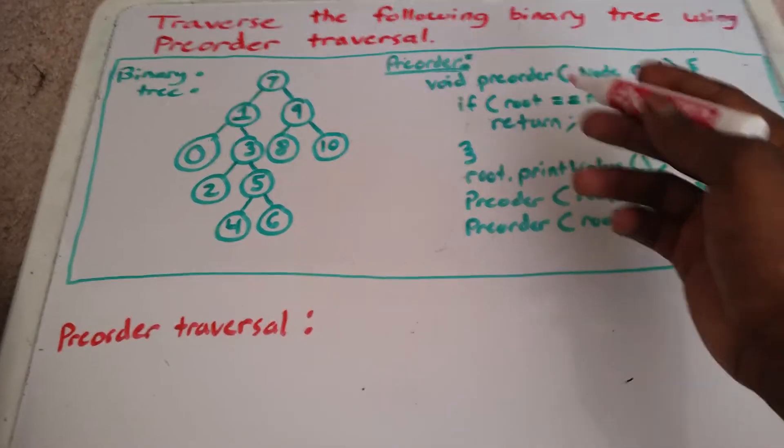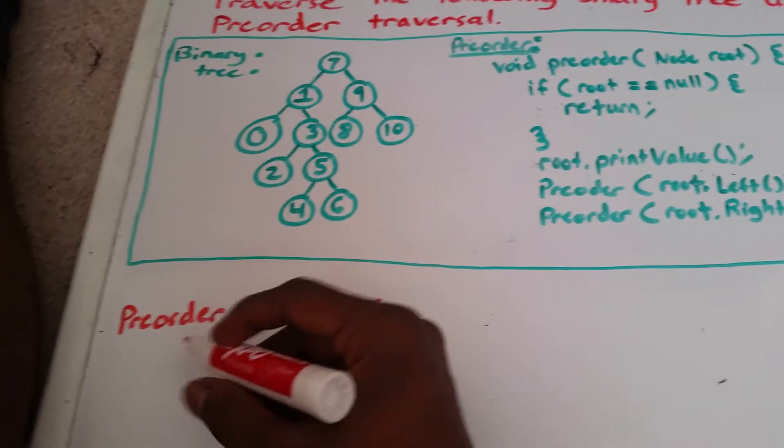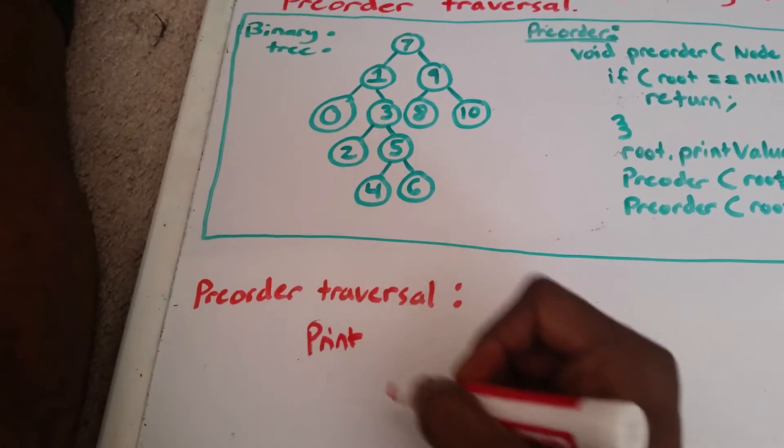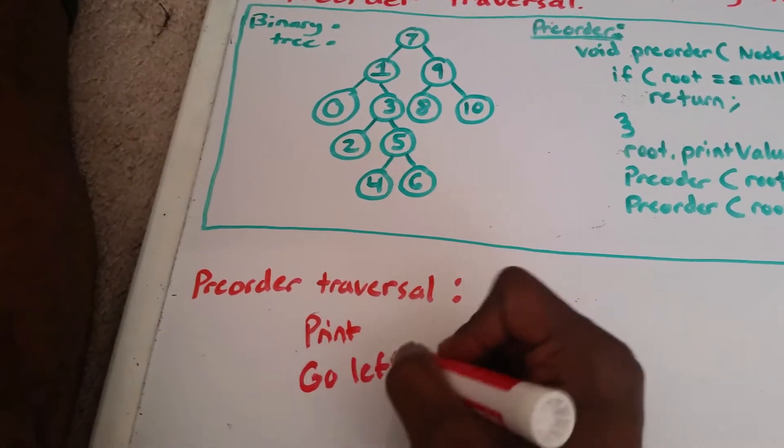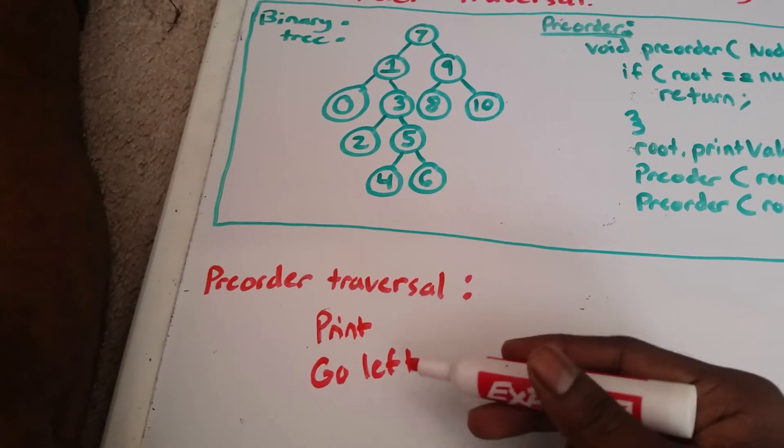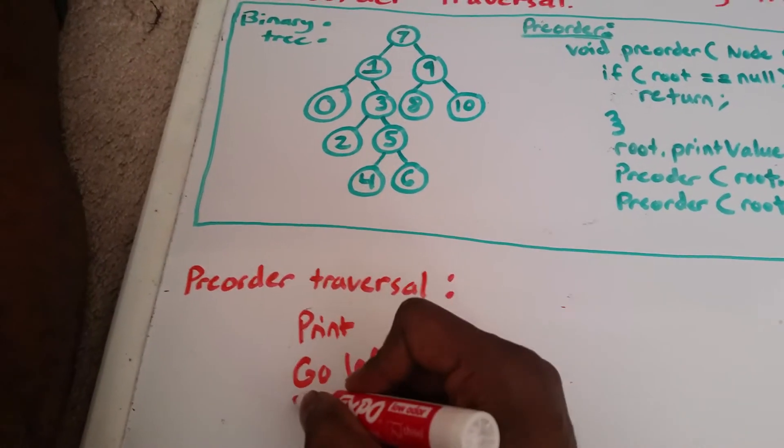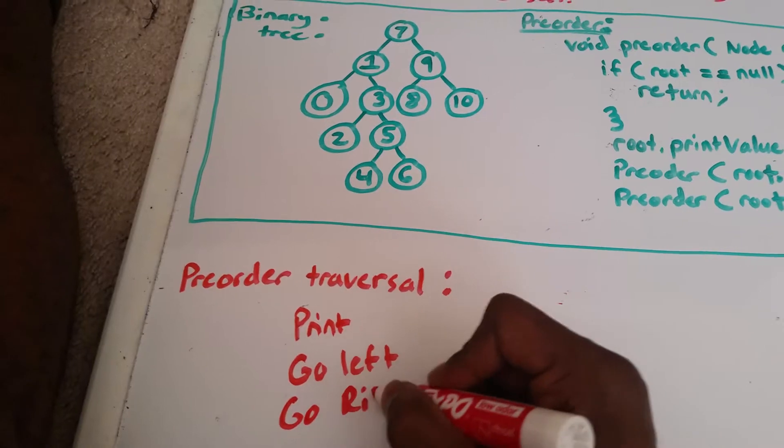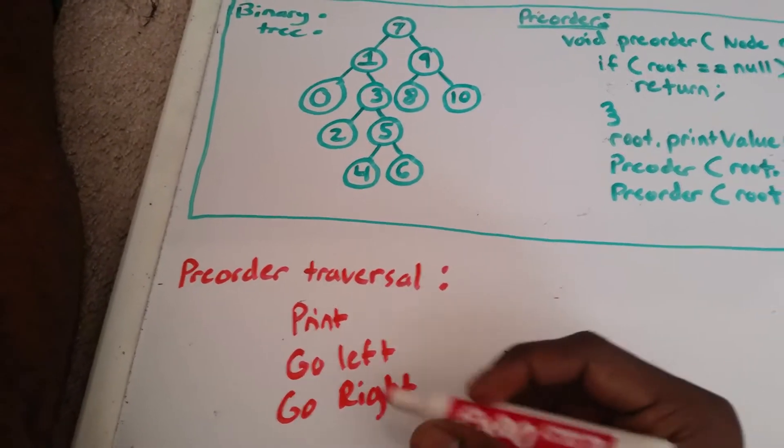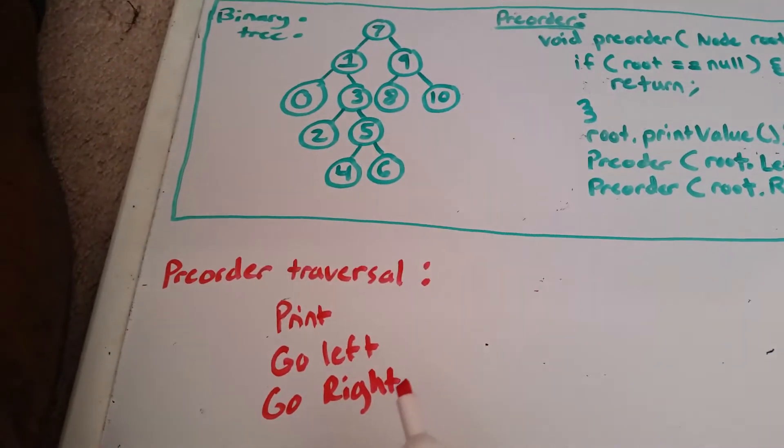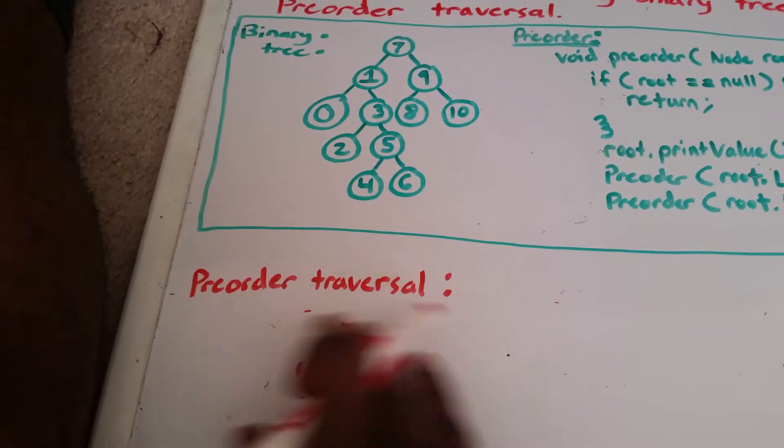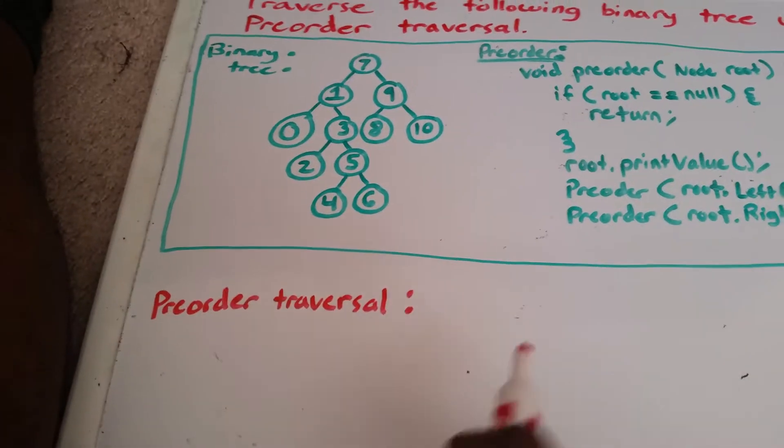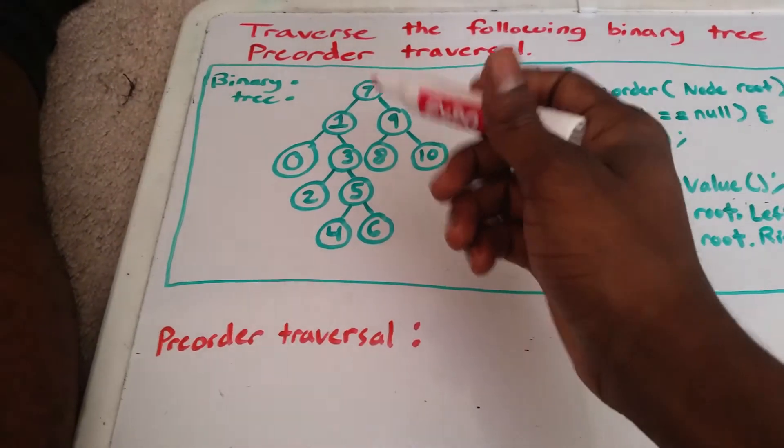So basically this code is just telling us to print the first node that we see, then go left, get all the node values to the left, and then we're going to go and get all of the node values to the right of that root. So it's really that simple, and we're going to go through it and write this in pre-order.